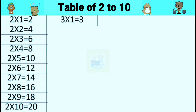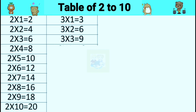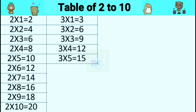Table of three. Three ones are three. Three twos are six. Three threes are nine. Three fours are twelve.